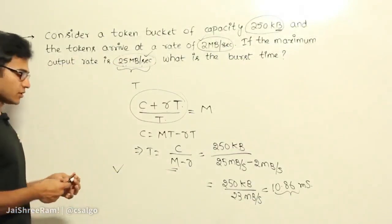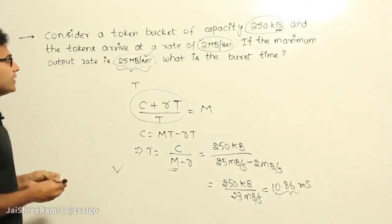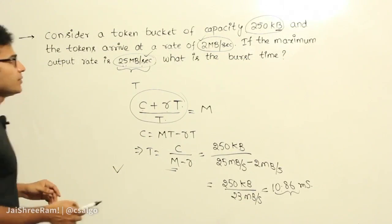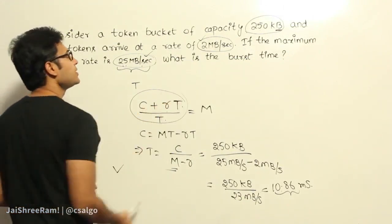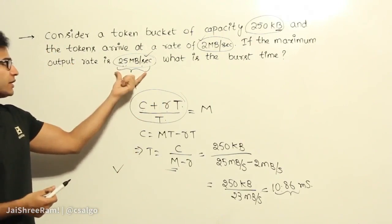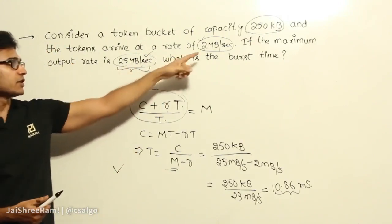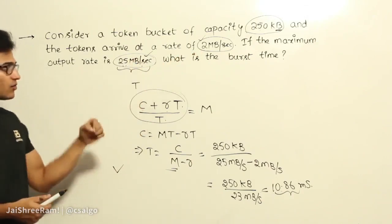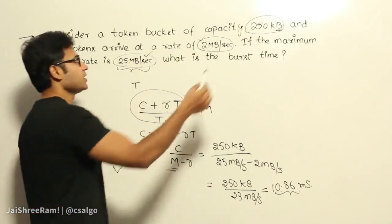Now in this question, you might have got a doubt. See, the rate in which the tokens are coming is only 2 Mbps, but how are you able to get the out rate at the rate at which the packets or bytes going out at 25 Mbps, which is very much greater than this, right? How is it possible is because of the initial capacity.